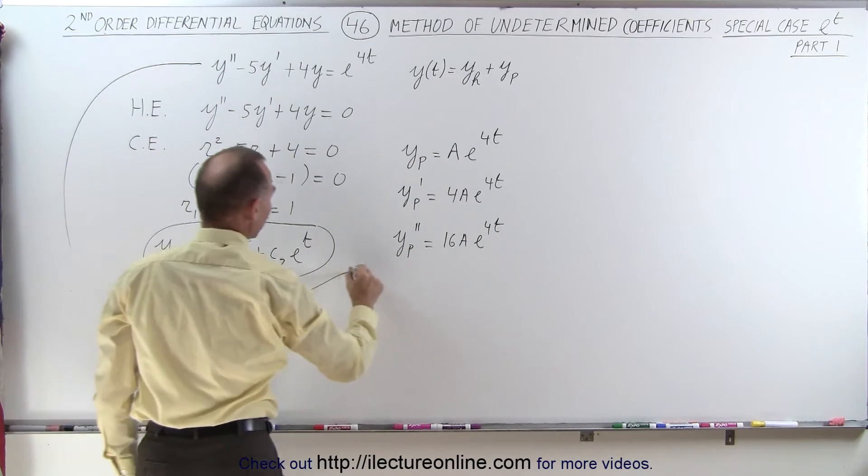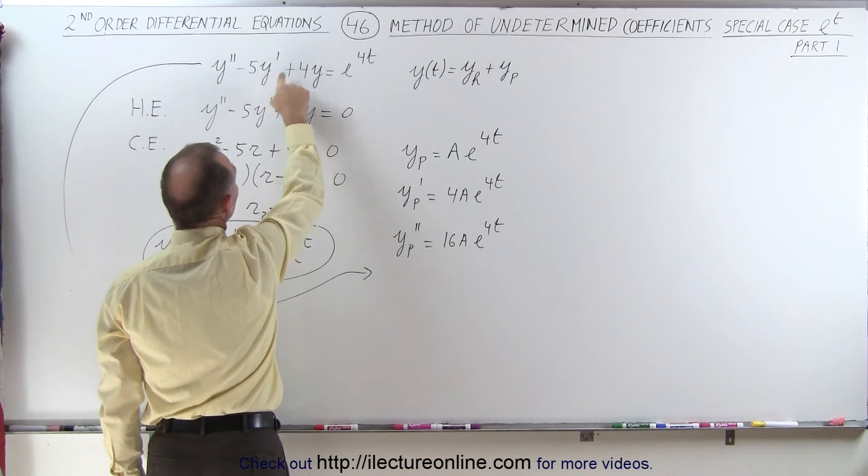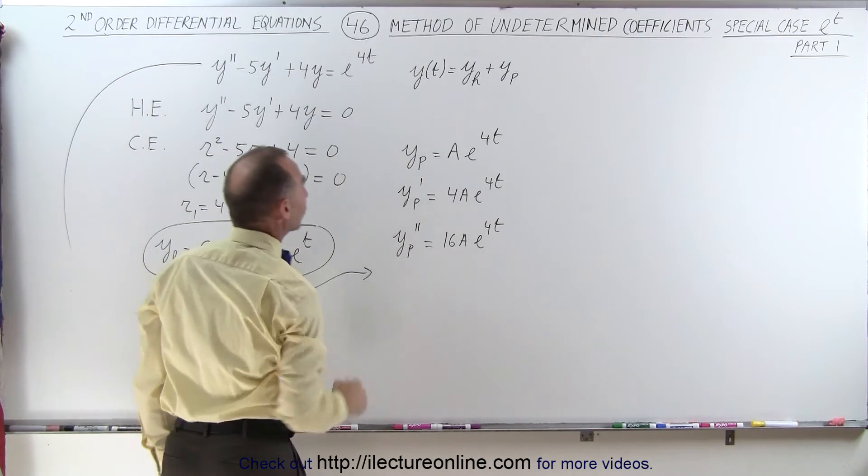Now we're taking this original differential equation and we plug in y double prime, y prime, and y and set it equal to e to the 4t.